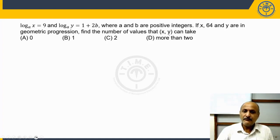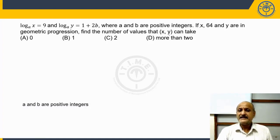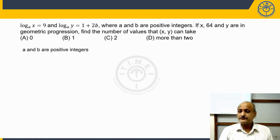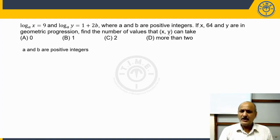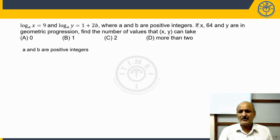Please observe carefully — there are four parts which are important in this question. First part: a and b are positive integers. Mind it, whatever values a and b can take, they should always be integers. They should be positive integers — negative values are not allowed, and zero is not allowed for a and b.